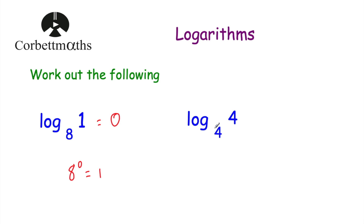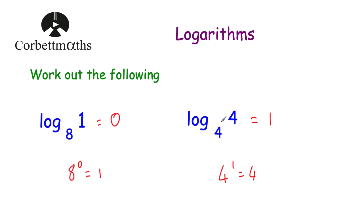Here we've got another one: log to base 4 of 4. We need to think, what power would we raise 4 by to get to 4? Well, 4 to the power of 1 is equal to 4. So log to base 4 of 4 is equal to 1. These two questions are quite important — if you've got log to base something of 1, the answer is 0, and log to base a of a is equal to 1.